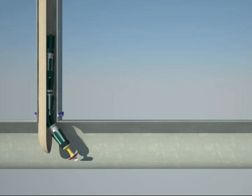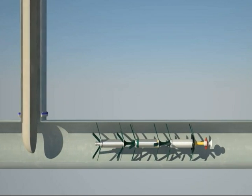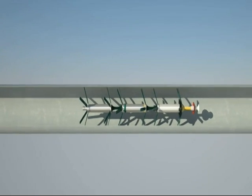As the tool enters the transmission main, it uses buoyancy and its fins to quickly stabilize itself in the center of the pipe.